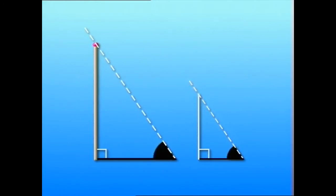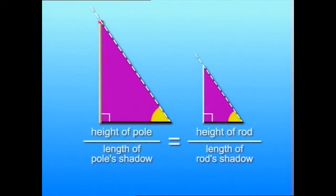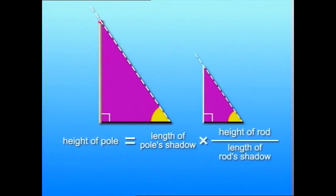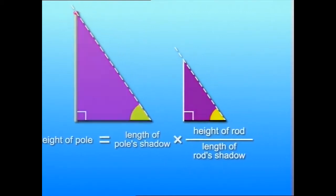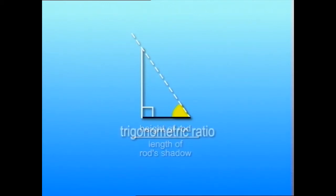Since the angle of the sun's rays projected on the tall pole is the same as those projected on the short rod, these two triangles are similar. By the similarity of triangles, the corresponding sides are proportional. So the tall pole's height equals its shadow length multiplied by the ratio of the short rod's height to its shadow length. This ratio of two sides of a right angle triangle is called the trigonometric ratio.